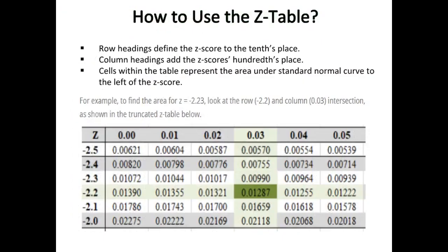How to use the Z table: row headings define the Z score to the tenths place, and column headings add the Z score's hundredths place. Cells within the table represent the area under the standard normal curve to the left of the Z score. For example, to find the area for Z = −2.23, look at row −2.2 and column 0.03. The area to the left of Z = −2.23 is 0.01287.